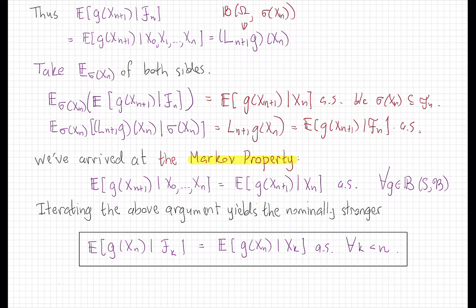Now, we can state this more generally. If we go through this same argument again, being a little more careful, we can get this more general property here, that if I take g(X_n) and condition it on F_k for any k less than n, so all of the random variables up to time k, where k is less than n, then that will be the same as conditioning on just the endpoint X_k. So it's a more general property.